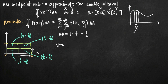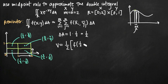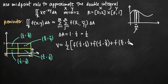To find the volume above the large rectangle and below the function, we take delta a — which is one half — and multiply it by the sum of the function evaluated at each of the four coordinate points: f(1/2, 1/4) plus f(1/2, 3/4) plus f(3/2, 1/4) plus f(3/2, 3/4).